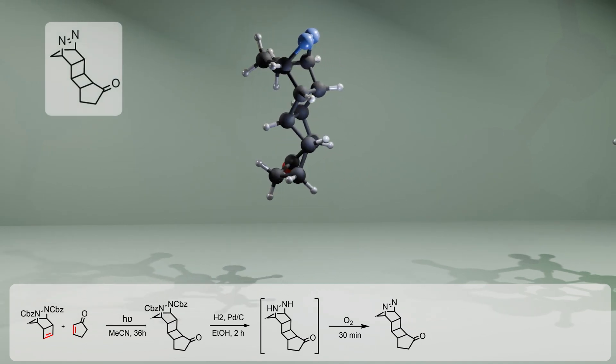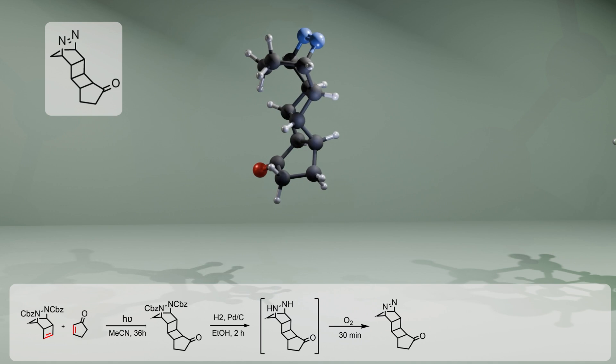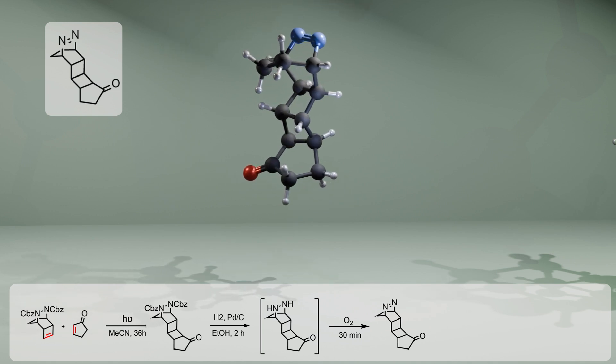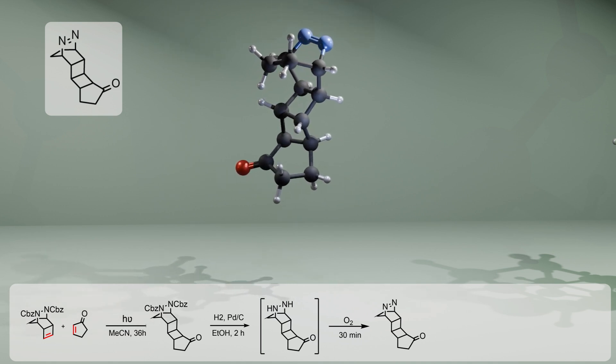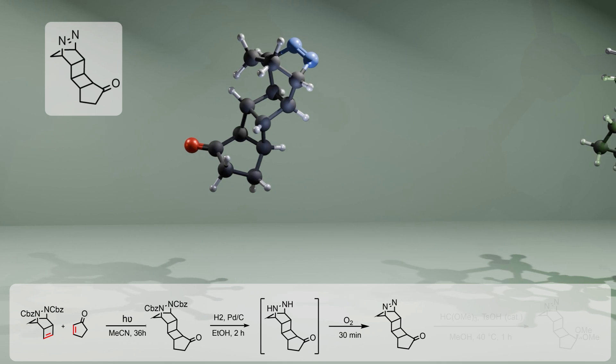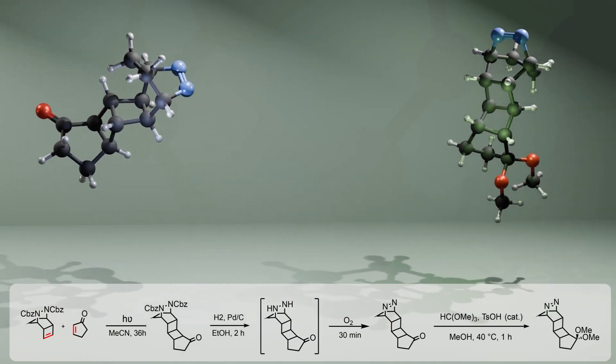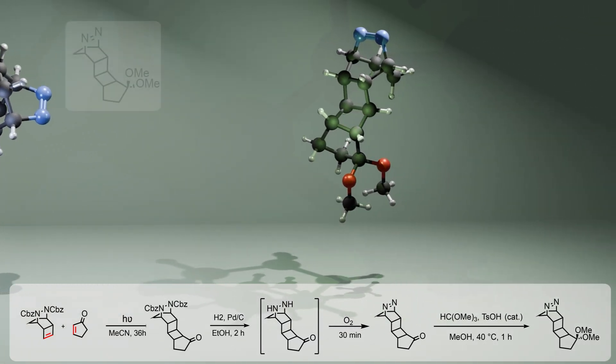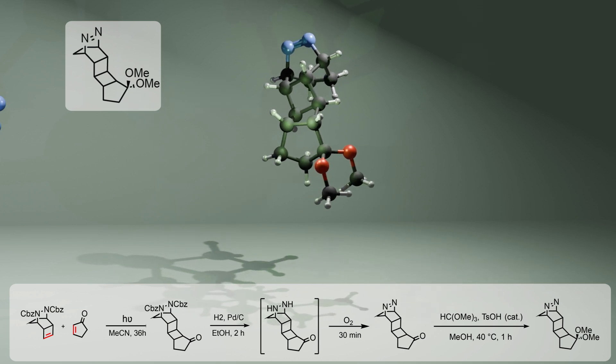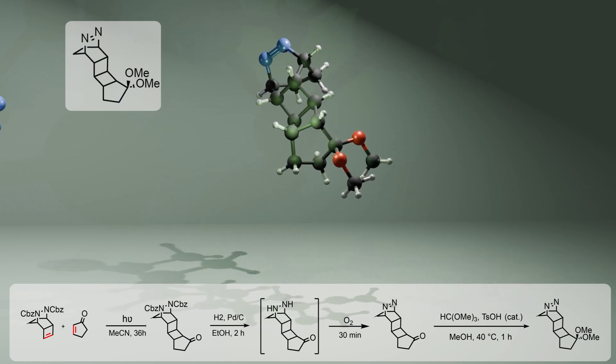The authors pointed out under both thermal and photochemical conditions, all attempts at azo decomposition failed to yield the sub-target ladderane system. However, a solution to the problem was found after the ketone was exposed to methyl orthoformate in the presence of a catalytic amount of p-toluenesulfonic acid, giving dimethyl ketal.